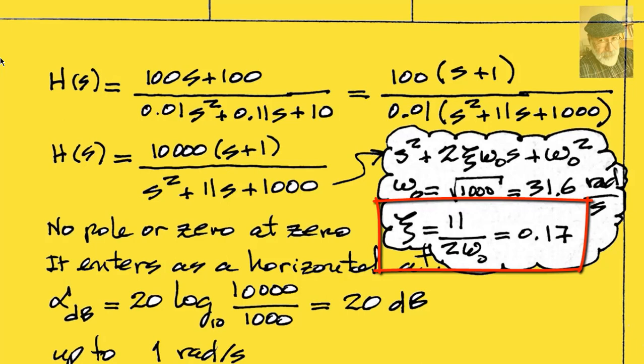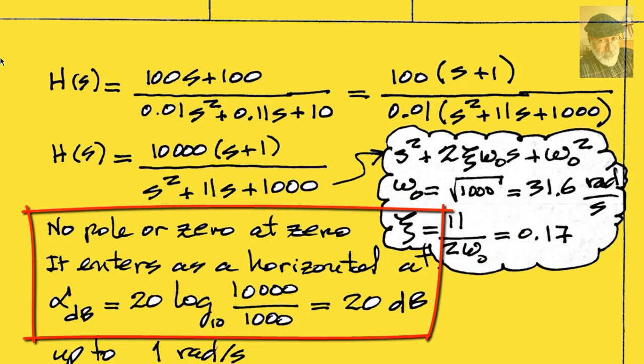We are ready to start. Because there is no zero or pole at zero, the amplitude plot enters from the left as a horizontal line with the value found from evaluating 20 log of the absolute value of the function at s equal j0. That is 20 log of 10,000 divided by 1,000. That is 20 log of 10, which is 20. 20 decibels.